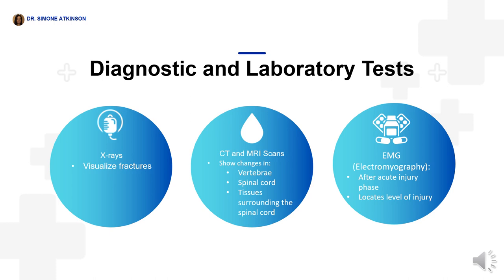Diagnostic and laboratory tests include x-rays to visualize fractures, CT and MRI scans to show changes in the vertebrae, spinal cord, and surrounding tissues. An EMG may be done after the acute injury phase to locate the level of injury.